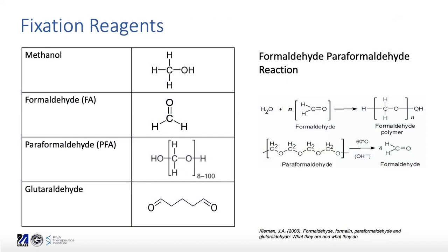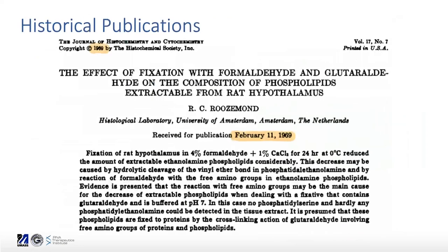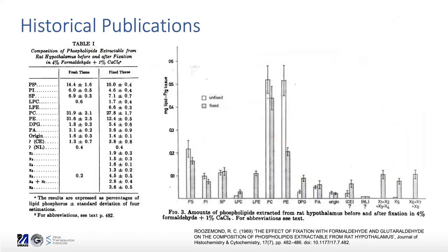First, let's look back in history at what has been done on this topic. Here is a paper from 1969 which focused on the amount of phospholipids you can extract from rat hypothalamus depending on whether the cells are fixed or unfixed. The amount of phospholipids, depending on type, is very different — in some cases a phospholipid doesn't show up when fixed, and the amounts vary depending on fixation status.